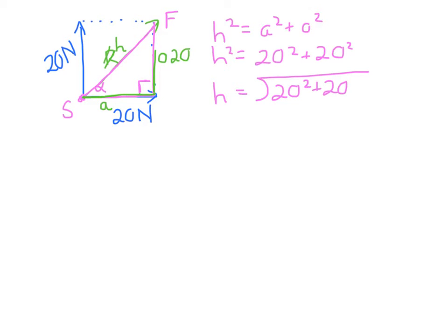So h is going to be equal to the square root of 20 squared plus 20 squared, which is 400 plus 400, which is 800 in total. And when I square root 800, I land up with 28.28 newtons. So I've calculated the value of that resultant.